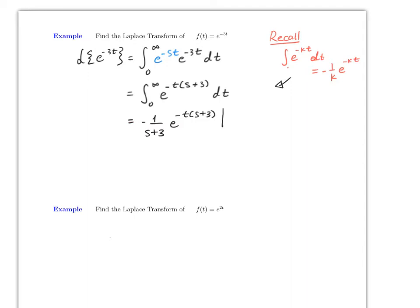Plugging in infinity gives zero since the exponent is negative. Plugging in zero gives e^0 = 1. With the negatives canceling, the result is 1/(s+3). So the Laplace transform of e^(-3t) is 1/(s+3).